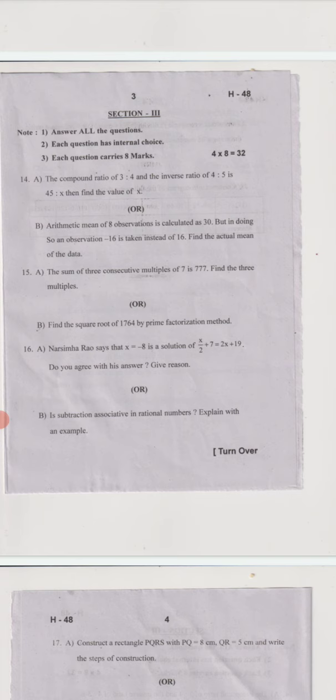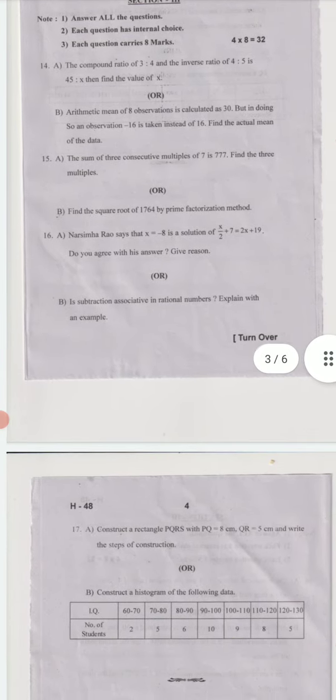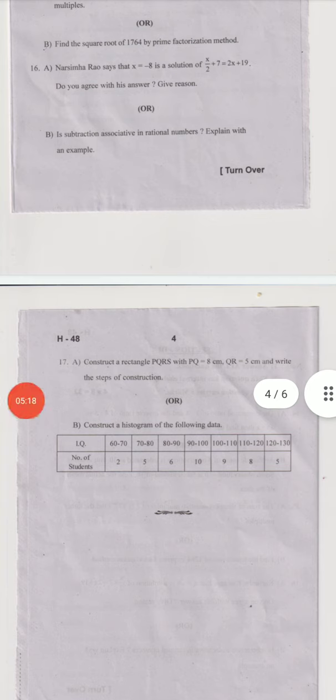These are easy questions only. Just look at the questions: 14, 15, 16. I am not reading them, so you can read and do yourself. See, 16th question option B is: is subtraction associative in rational numbers? Explain with an example. This is an easy question from Chapter 1.